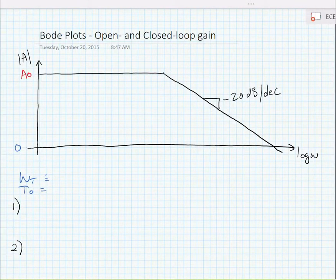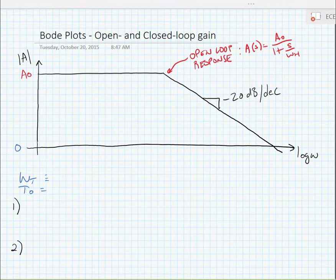Alright, so here is a Bode plot representing the open loop gain of an op-amp. Our open loop response, A sub s, is equal to A sub 0 divided by 1 plus s divided by omega h.